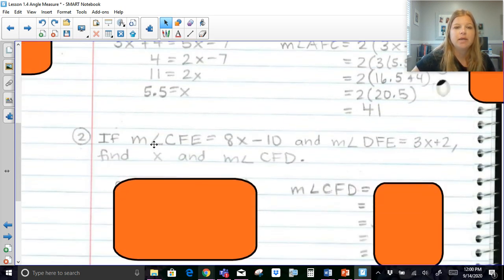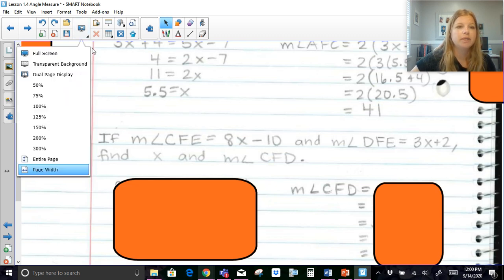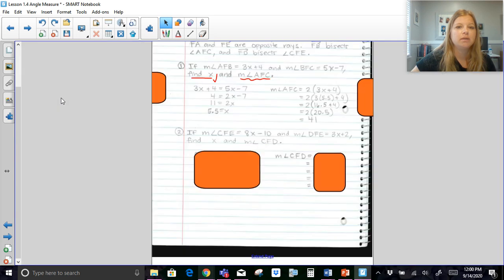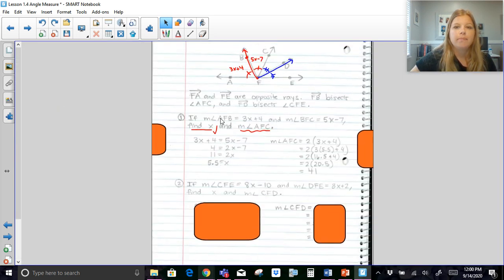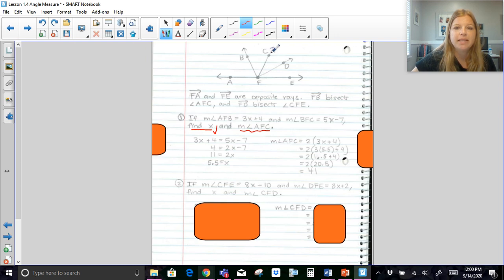So now this next one. The measure of angle CFE is 8X minus 10. So I'm going to zoom my screen out just a little bit here. So the measure of CFE. So let me start fresh. I can erase what I just did. So I start fresh on this next problem.